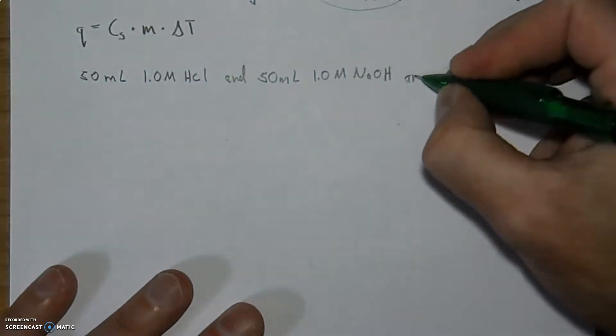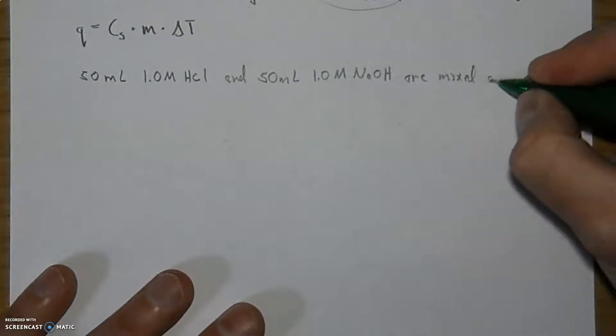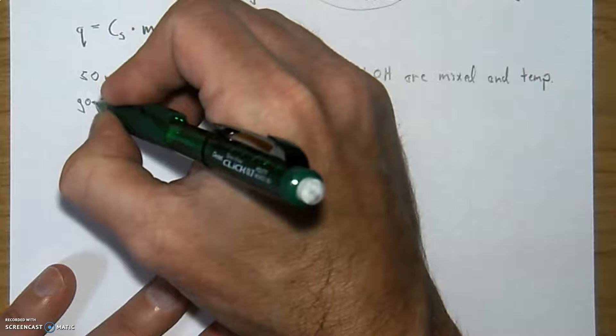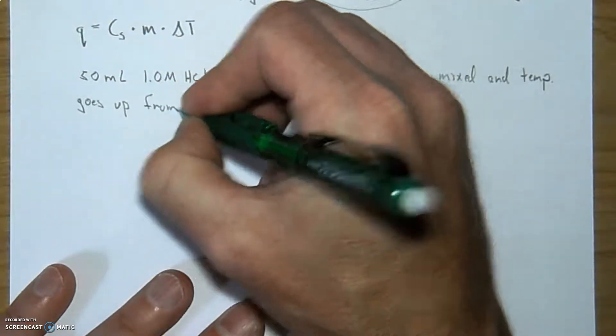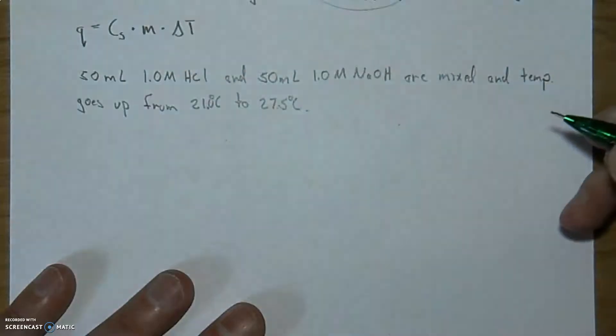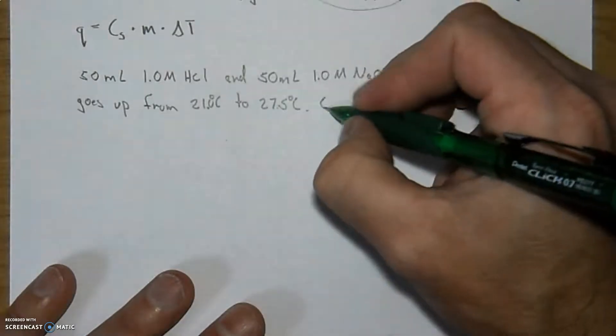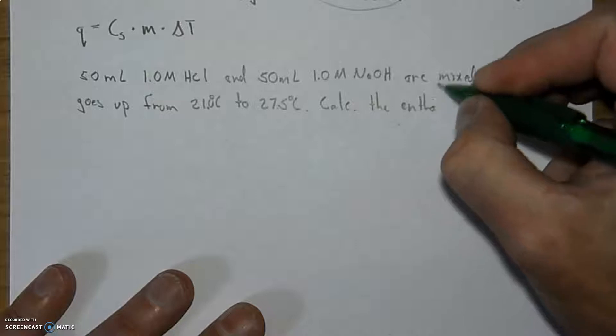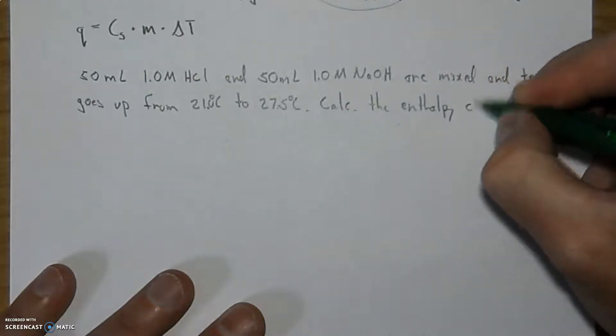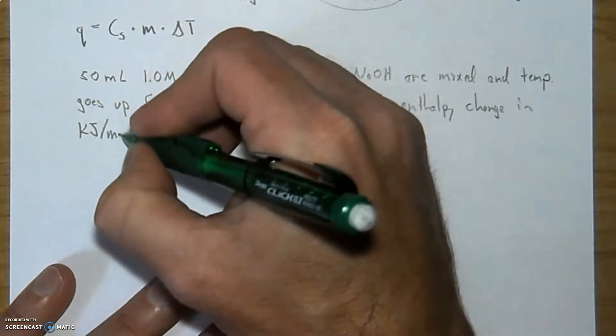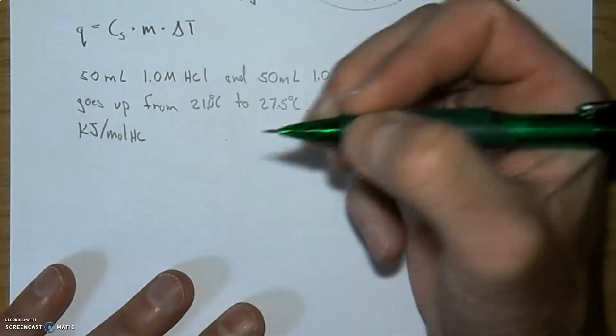These two solutions are mixed, and the temp goes up from an initial temperature of 21.0 degrees Celsius all the way up to 27.5 degrees Celsius. We've got a temperature increase. It's an exothermic reaction. I am asking you to calculate the enthalpy change in kilojoules per mole of HCl. Very important, HCl.